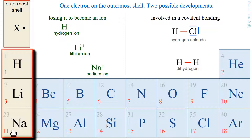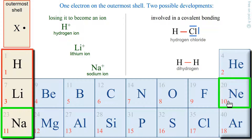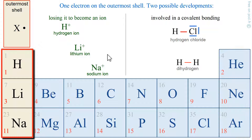Sodium, for example, Z equals 11, is very close to Neon, Z equals 10. To look like Neon, it may lose its valence electron. At that point, it can become the sodium ion. This is why the sodium ion exists in this form.